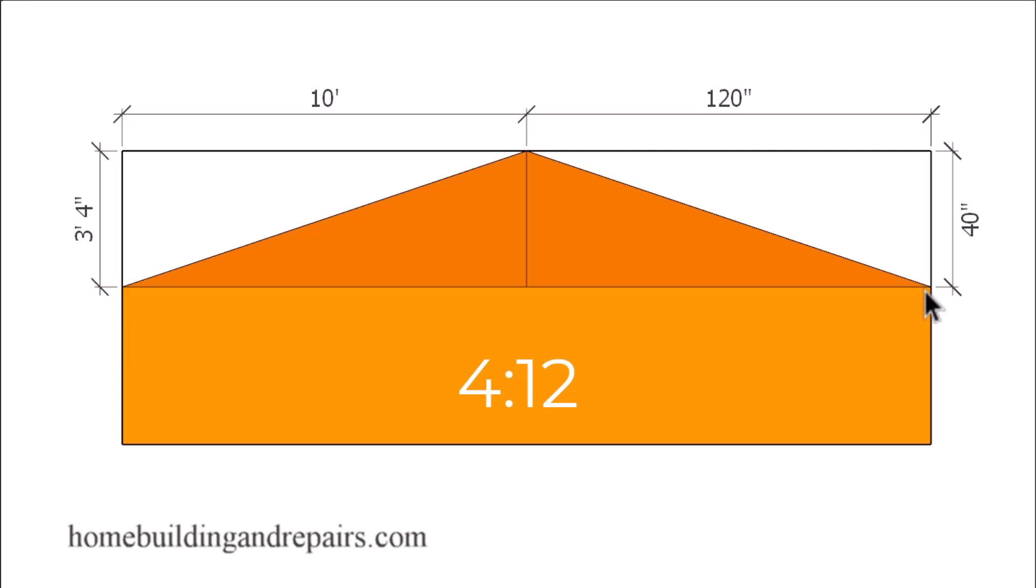And that basically means for every one foot we go horizontally, we're going to go up four inches vertically. And of course 40 inches is the same as three foot four inches and 10 feet is the same as 120 inches.